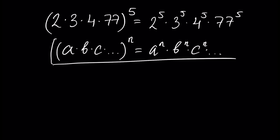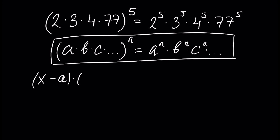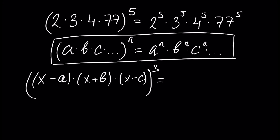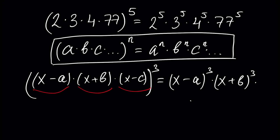This is the general formula. For another example, assume we have (x minus a) times (x plus b) times (x minus c), all raised to the power of 3. Using the previous rule, this equals (x minus a) to the power of 3, times (x plus b) to the power of 3, times (x minus c) to the power of 3. This was the first rule, and the reverse is also valid.